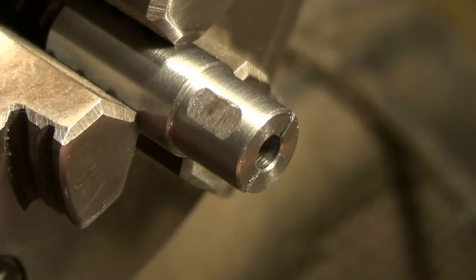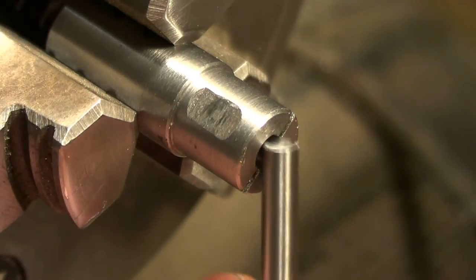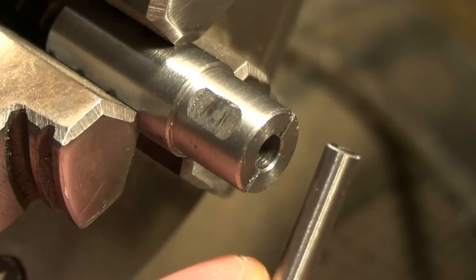This is a simple split collet for doing accurate repetitive work in the lathe. I recently wanted to turn lots of pieces from 4mm silver steel bar.